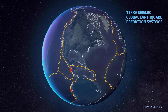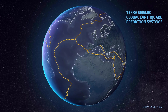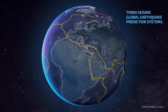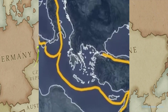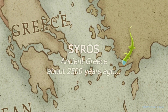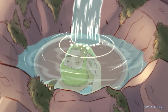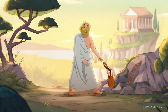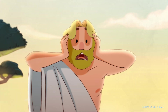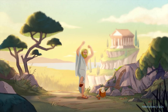TerraSeismic Global Earthquake Prediction Systems use satellite big data and ground-based instruments to identify areas around the world where B systems are forming. Throughout human history, earthquakes have been forecasted many times based on observation of unusual natural phenomena. The first known forecast was made by Pherocides of Syros in ancient Greece about 2,500 years ago. Pherocides made his forecast by noticing that the usually clean water from a well had become silty and muddy, and the earthquake did indeed happen two days later.